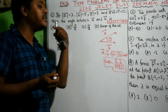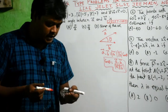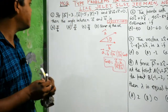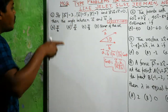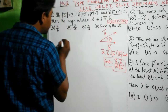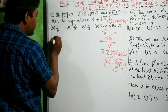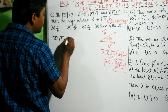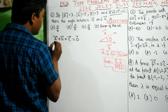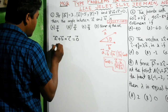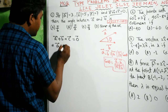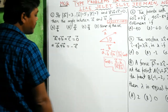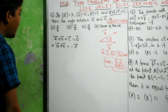So A dot B — mod A and mod B are already given to you. The relation given is A vector plus B vector plus C equals 0. So if we take C vector to the right side we will get minus C vector.